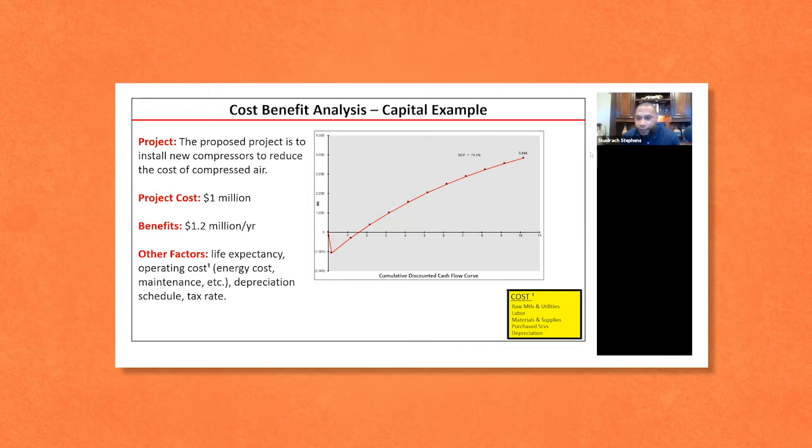So the benefit of it is about $1.2 million per year. And so you would say just at face value, if I invest a million dollars, I get back $1.2 million annually. That's a great project, right? We should be doing it right away. But like Rob mentioned, there's a lot of factors that you have to look into, right?